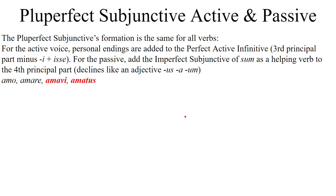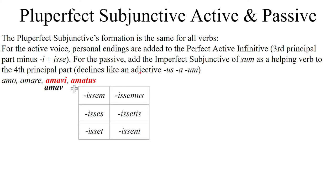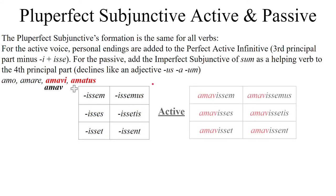And finally, the pluperfect subjunctive, active and passive. Take the verb, go to the perfect stem — which is the third principal part — and chop off the letter I. Then add -isse, giving you the perfect active infinitive. Personal endings are then added to this: -issem, -isses, -isset, -issemus, -issetis, -issent. If it's easier to go to the perfect active infinitive directly — for example amavisse — and then add -m, -s, -t, -mus, -tis, -nt, go ahead. The result will be the same: amavissem, amavises, amavisset, amavisemus, amavisetis, amavissent.